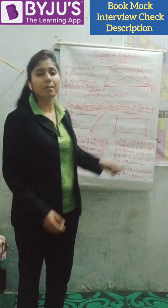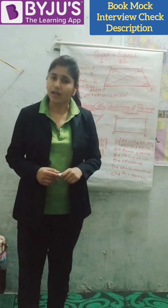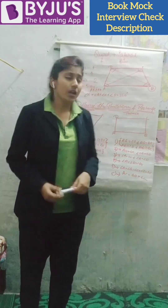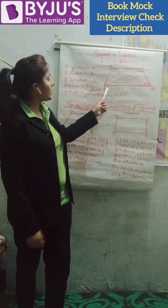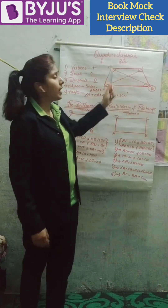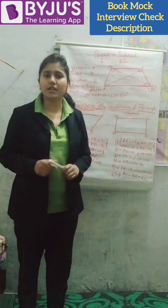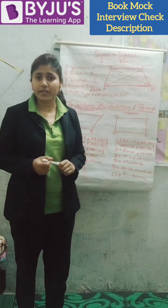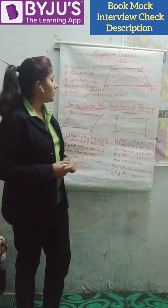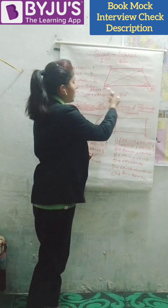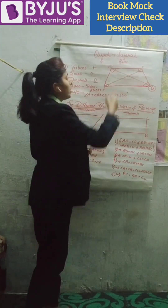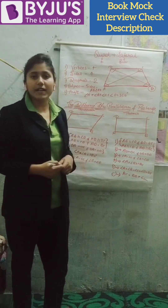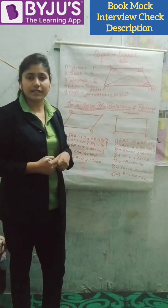This is the example of a quadrilateral. In quadrilateral ABCD, we have some points. The first is vertices. Points A, B, C, and D are called vertices.